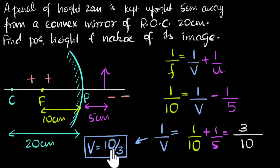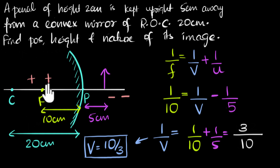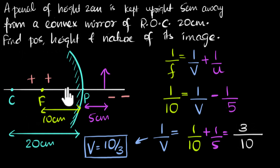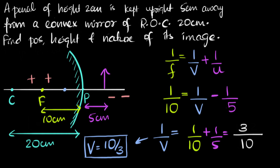Now we need to interpret this result carefully. A positive value for v tells us the image is on the positive side of the mirror — behind it — at ten over three, which is about 3.33 centimeters. The height of the object is given as two centimeters.